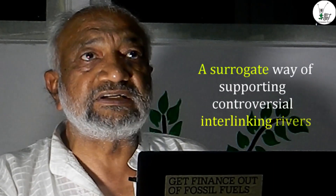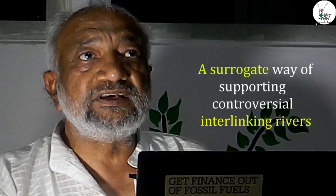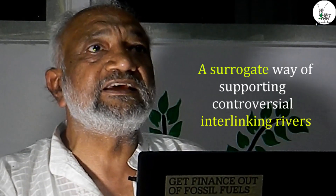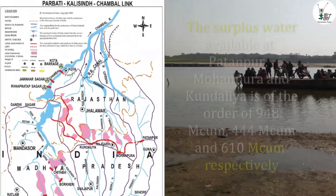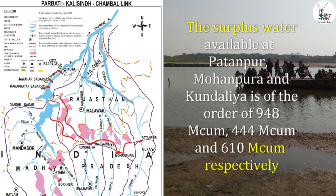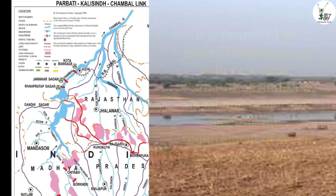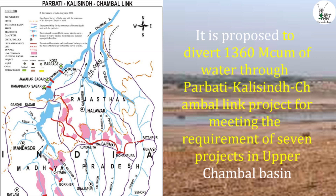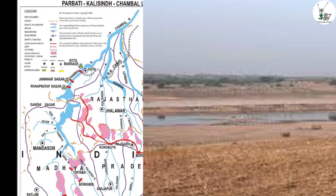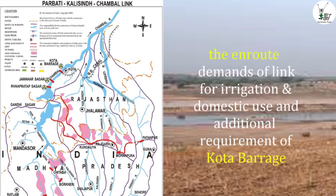The most striking thing about the Kundalya Irrigation Project is that it seems to be a surrogate way of supporting the controversial interlinking of rivers. Several of these reservoirs, described as surplus, are going to enable the linkage of the Parbati, Kali Siddhi, and Chambal rivers, which are in a drier region, with significant implications for inter-basin water transfer.